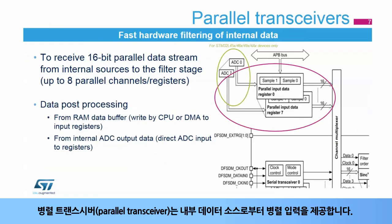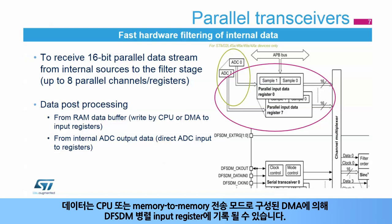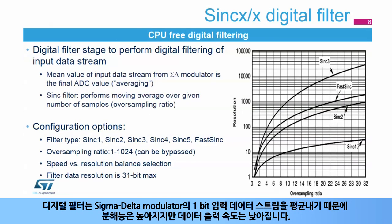Parallel transceivers provide parallel inputs from internal data sources, for example from memory buffers. Parallel inputs are usually used for fast hardware filtering of internal data from the ADC or any data collected from a communication peripheral. Data can be written to the DF-SDM parallel input registers by the CPU or DMA configured in memory-to-memory transfer mode. For STM32 L45X, 46X, 49X, and 4AX devices, the internal analog-to-digital converters provide parallel data directly to the DF-SDM parallel input registers.